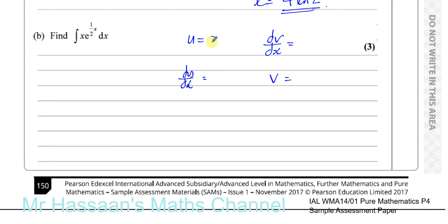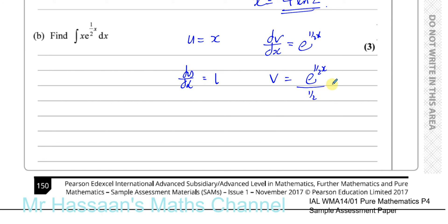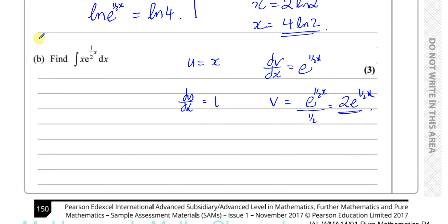So u equals x and dv/dx equals e to the power of half x. To find v, we integrate e to the power of half x: the exponential stays the same, but we divide by the differential of the exponent, which is a half, giving v equals 2e to the power of half x. The integration by parts formula is: integral of u dv/dx dx equals uv minus integral of v du/dx dx.